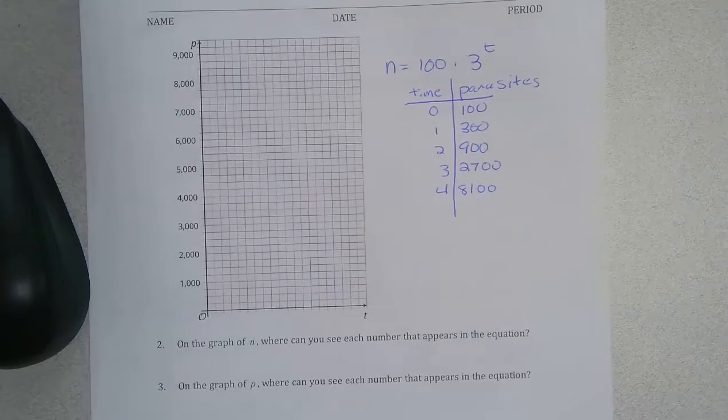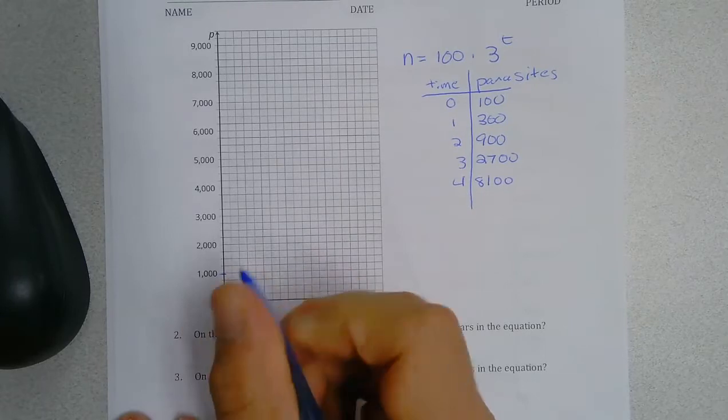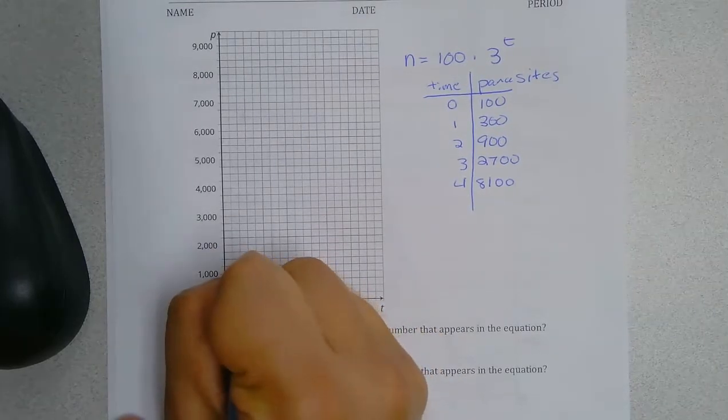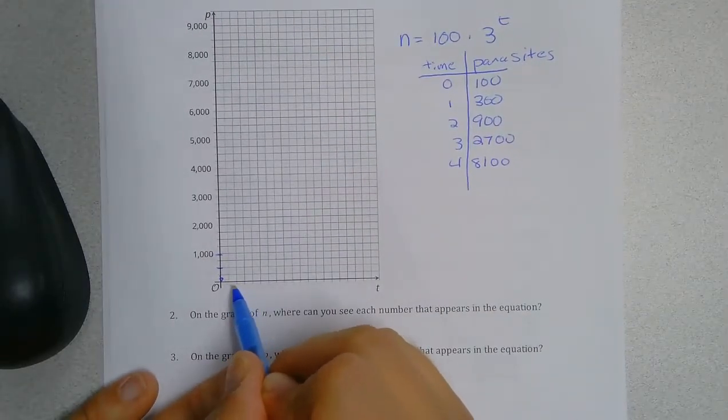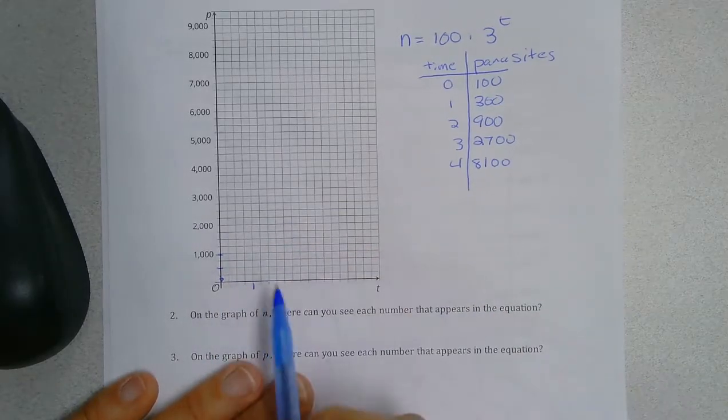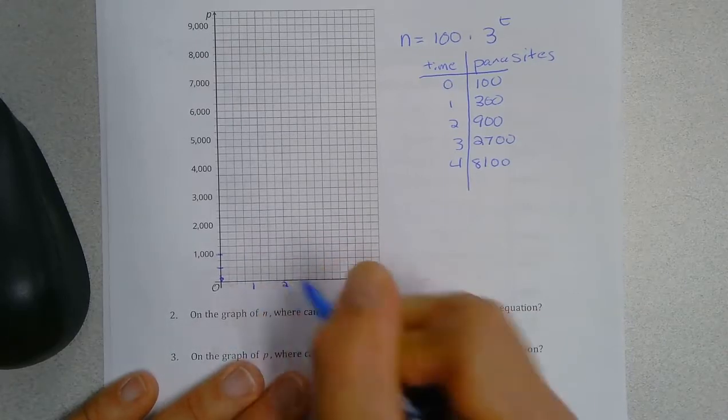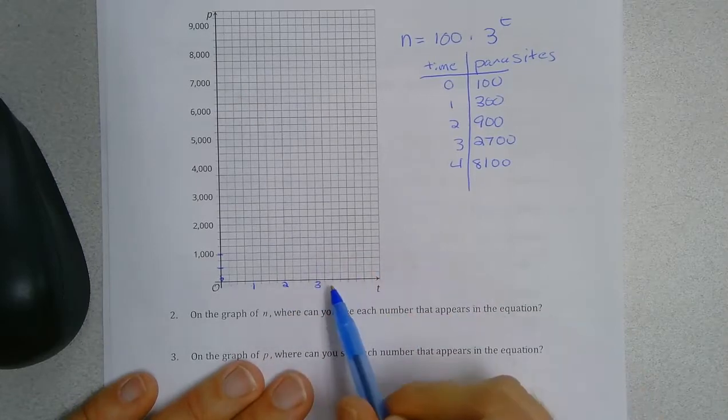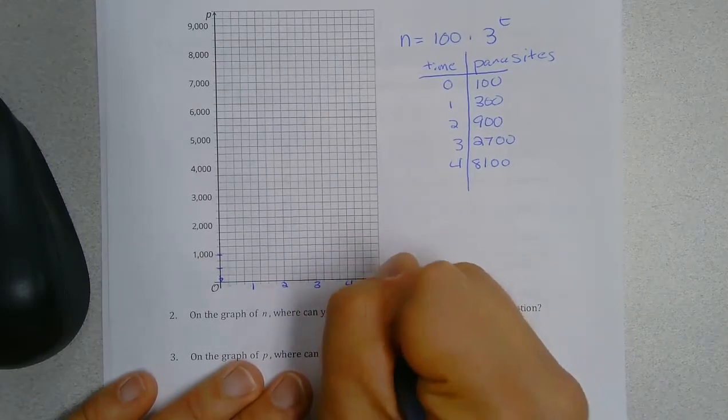So if I were to graph this at time 0, if this is 1,000, this is 500, this would be 250. So 100 is going to be about right there. Now, remember, we're going to count by 4. So counting over, this would be time 1, time 2, time 3, and time 4.